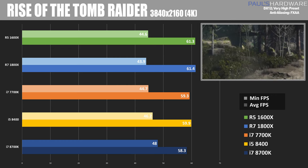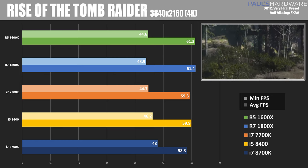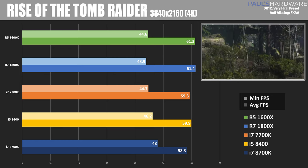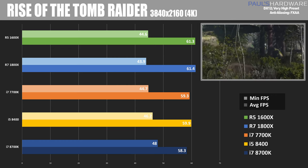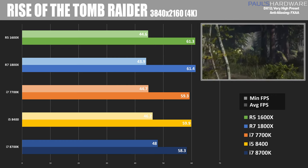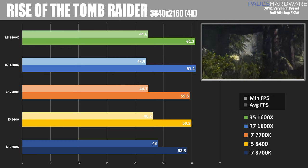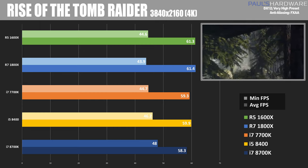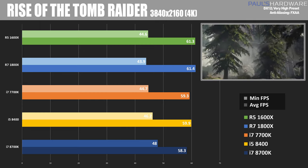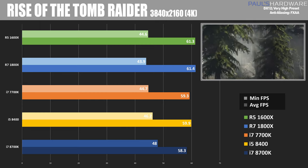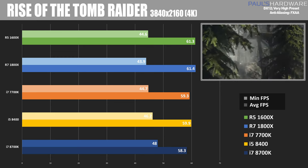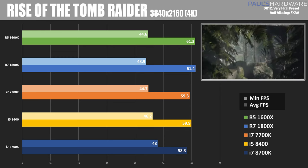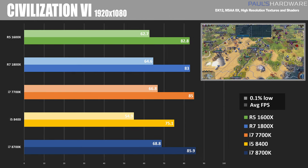When we jump up to 2160p in Rise of the Tomb Raider, we see a similar pattern — and interestingly the Ryzen CPUs jump ahead and take the lead, getting just a little bit faster at 61 frames per second. All of the minimum frame rates are roughly in the same ballpark.